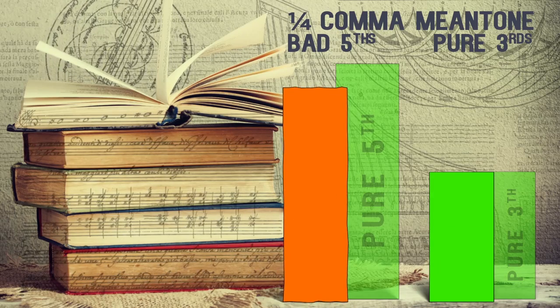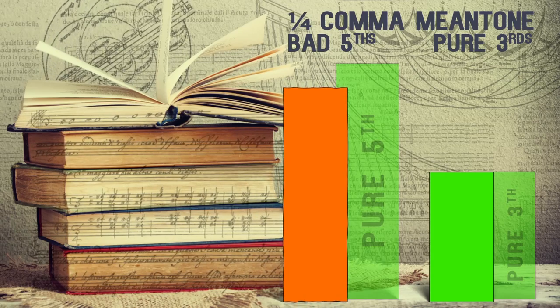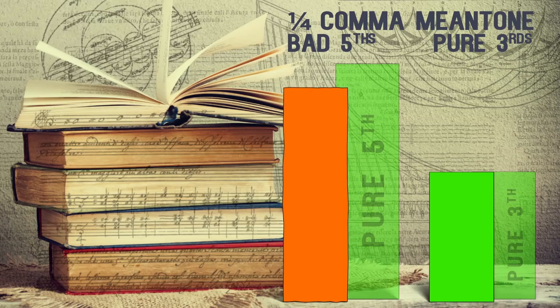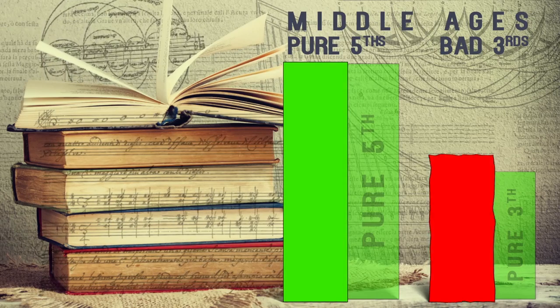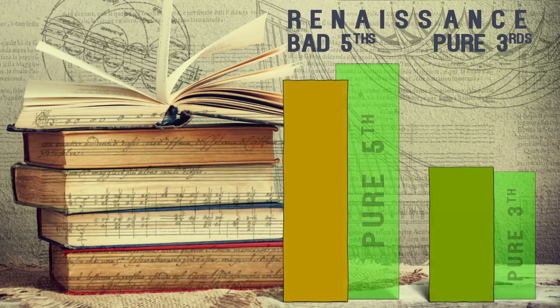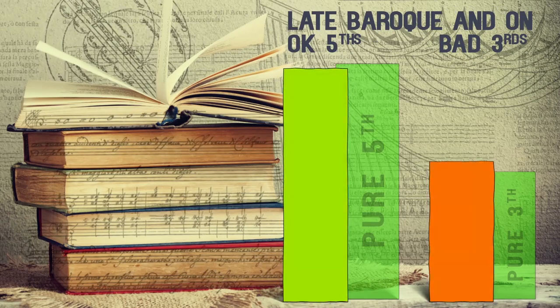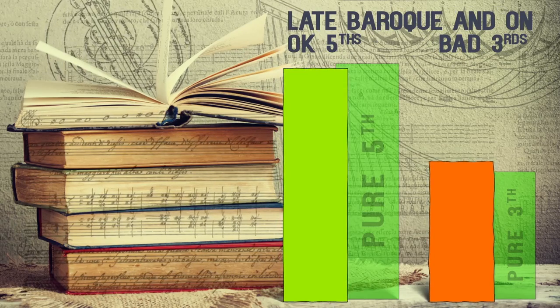To sum up, it's not possible to have everything — one has to choose what one favours. Very generally, one could say that in the Middle Ages they preferred the fifths over the thirds; in the Renaissance and early Baroque they preferred the thirds over the fifths; and later on in the Baroque until nowadays, the fifths are preferred again. This was part one of tuning and temperaments in the Renaissance. Join us for part two, where we'll talk about the actual sources. Feel free to share, comment, and like. See you next time at EarlyMusicSources.com.